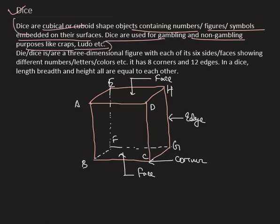Dice are three-dimensional figures with each of its sides or faces showing different numbers, letters and colors, etc. It has eight corners and twelve edges and in a dice, length, breadth and height all are equal to each other.